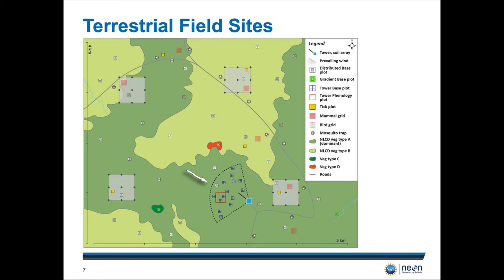Our terrestrial field sites switch things up a bit, where we have our tower indicated by a blue square. The tower's prevailing air shed defines the region where we monitor our tower base plots, soil base plots, and soil array. We have a very intensive monitoring location nearby the tower, but we also have distributed sites across the field site. These small white squares are our distributed base plots, occurring across all of the different land cover types.